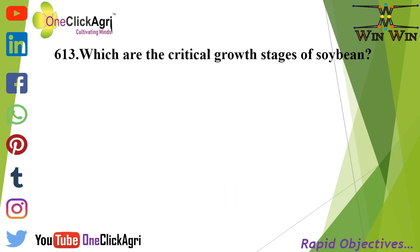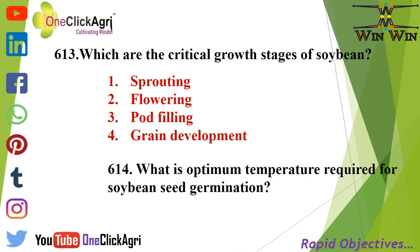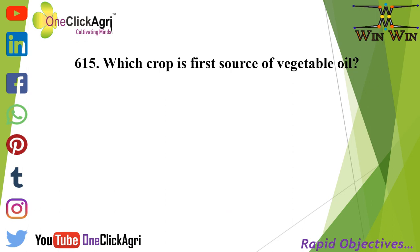The critical growth stages of soybean are: first sprouting, second flowering, third pod filling, and fourth grain development. The optimum temperature required for soybean seed germination is 30 degrees Celsius. Soybean is the first source of vegetable oil.